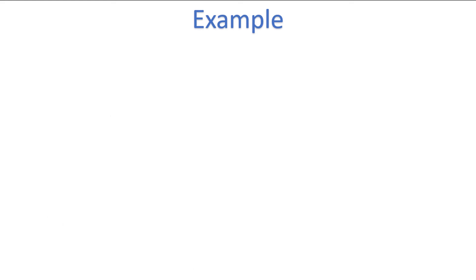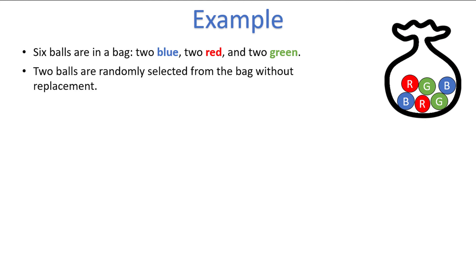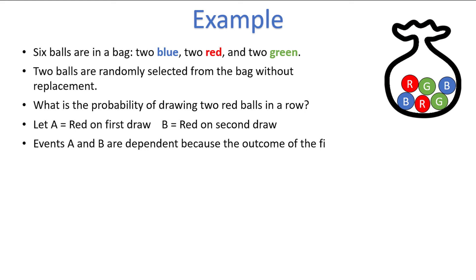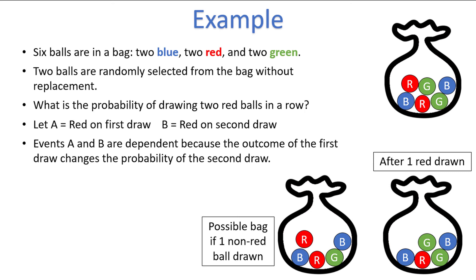What about this example? Let's assume that you have six balls in a bag — two blue, two red, and two green. Two balls are selected randomly without replacing the first ball before selecting the second. What is the probability of drawing two red balls in a row? We let A equal drawing a red ball on the first draw, and B equal drawing a red ball on the second draw. Events A and B are dependent. The outcome of the first draw changes the probability of the second draw. If a red ball is drawn first, there will only be one red ball remaining in the bag. If a non-red ball is drawn, then there will still be two red balls remaining. Therefore, the chance of drawing a red ball on the second draw depends on the color of the ball drawn first.